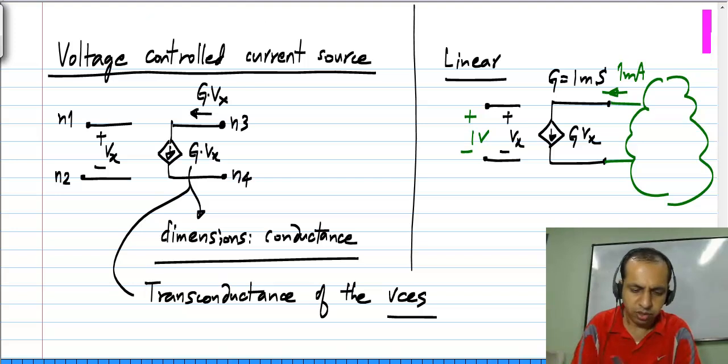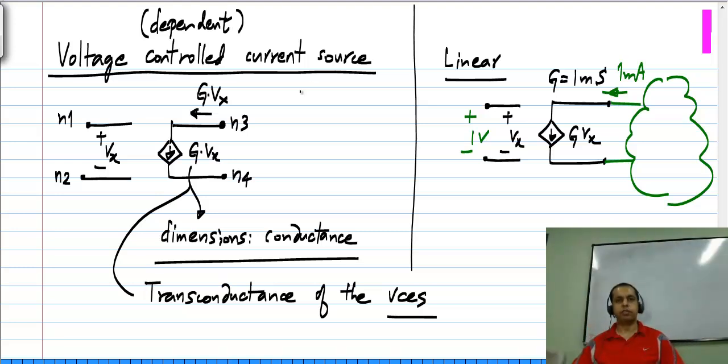And sometimes this controlled current source is also known as a dependent source, because the value of the controlled source whether it is voltage or current depends on some other variable in the circuit.